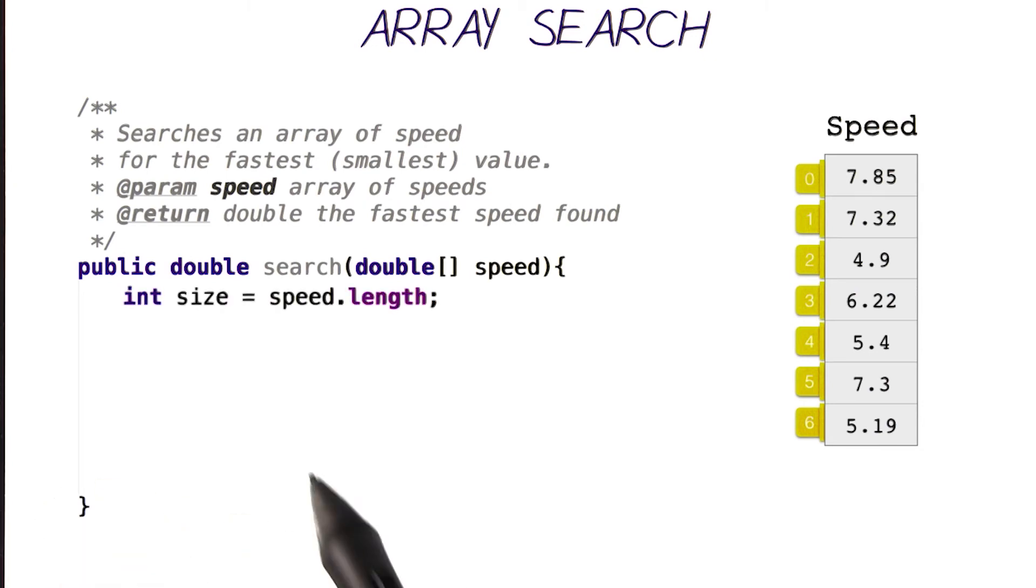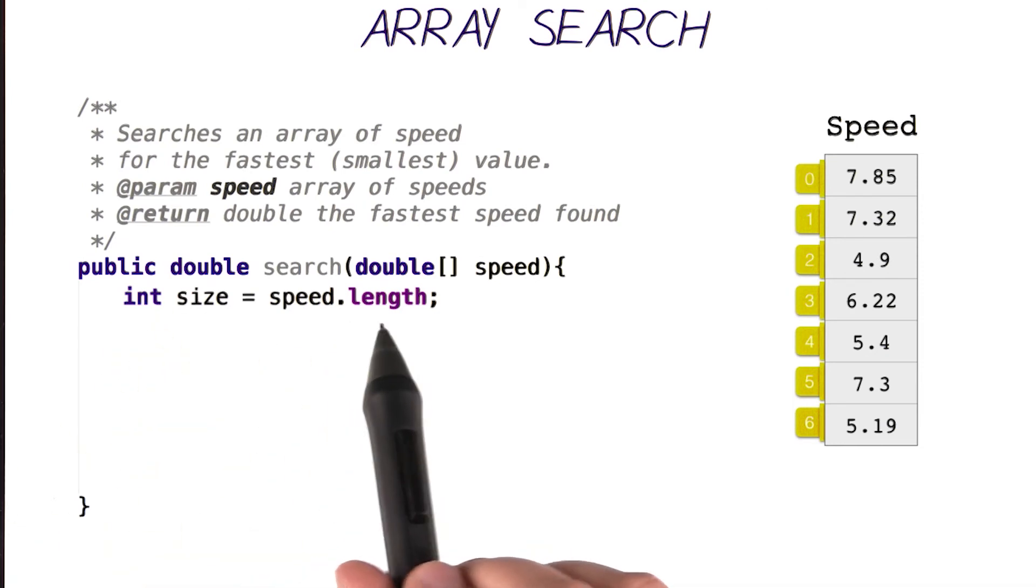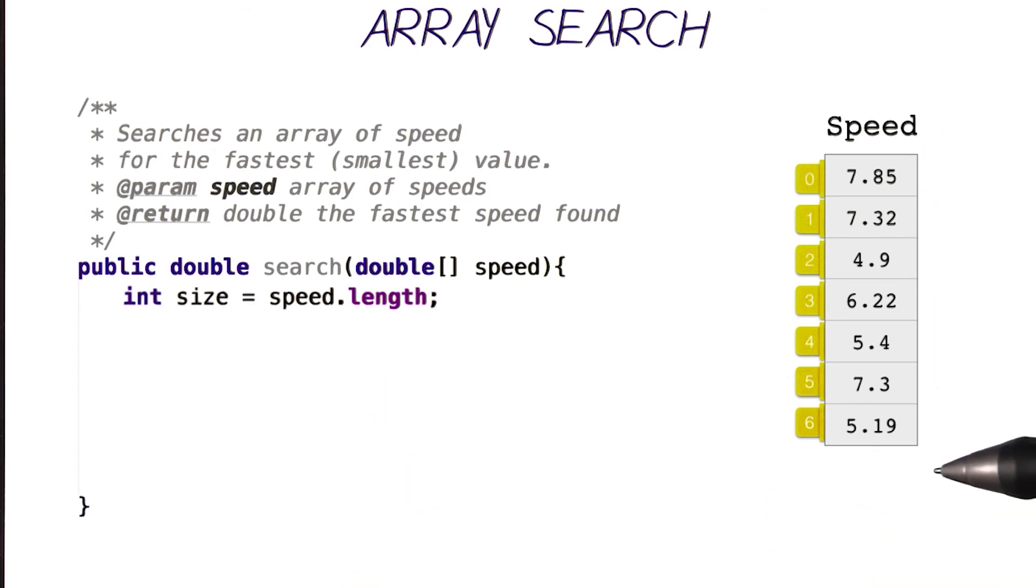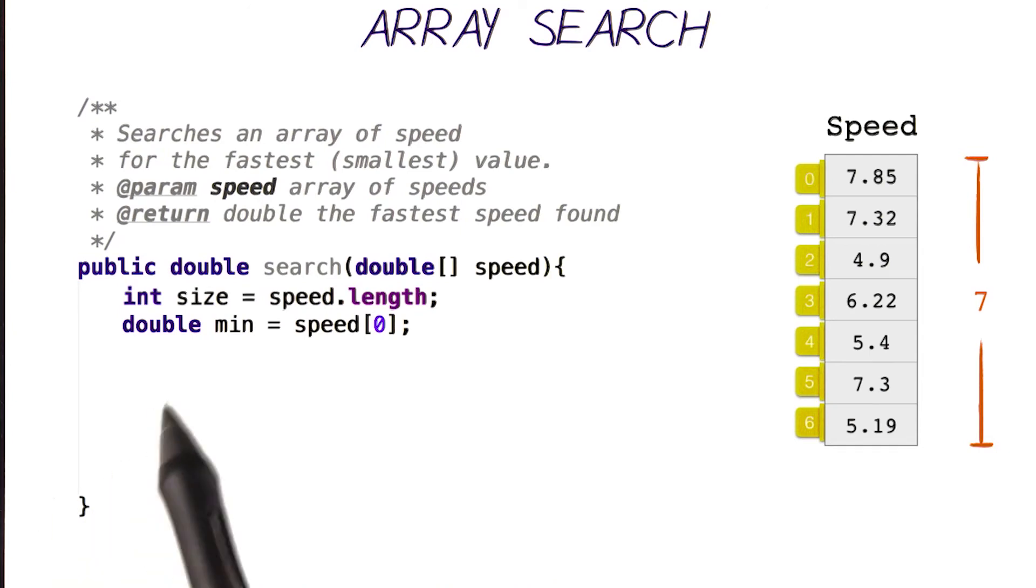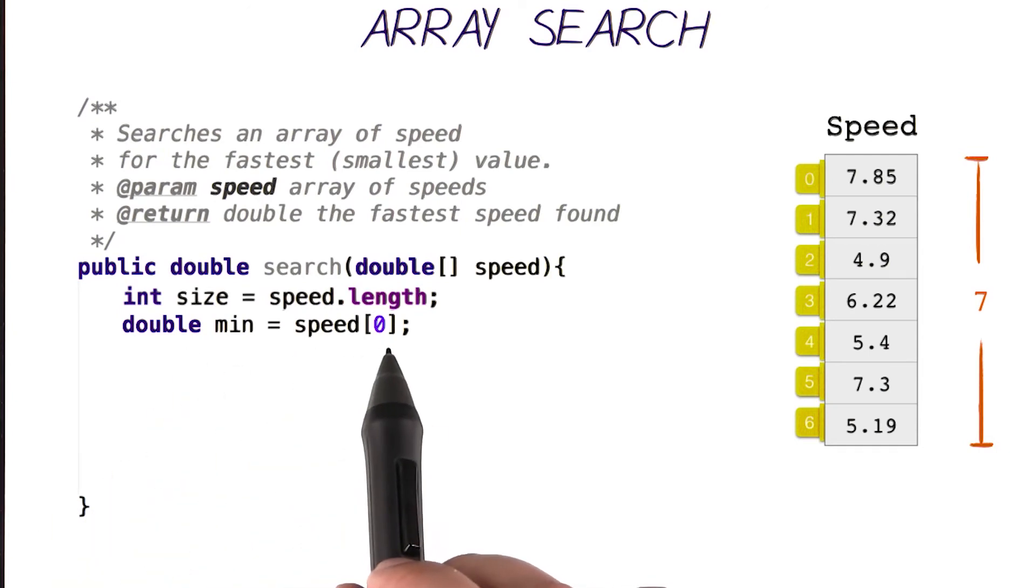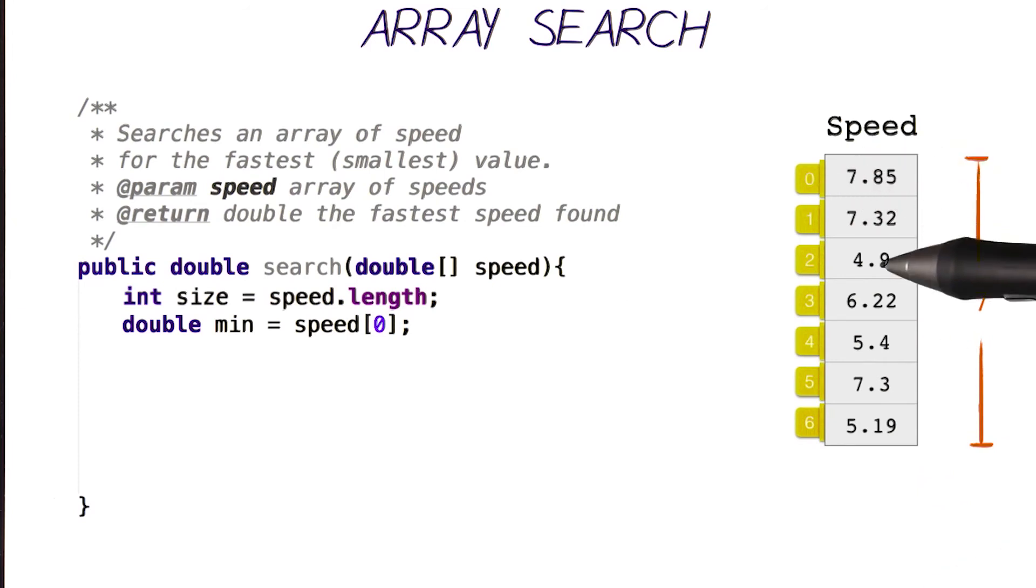The first thing we need to do is get the length of our array and store it into our variable called size. Any array.length calculates how many cells is in that array and returns an integer number of that value. In this case, our size is actually 7, because we have 7 cells in our array. The next step is to create this variable called min, which remembers the smallest number as we go, and we're going to initialize it to the very first item in our array, which is speed of 0. So, after this instruction, the variable min would have 7.85 in it. If there was another array passed in as a parameter, then it would just grab whatever value is in the very first item.